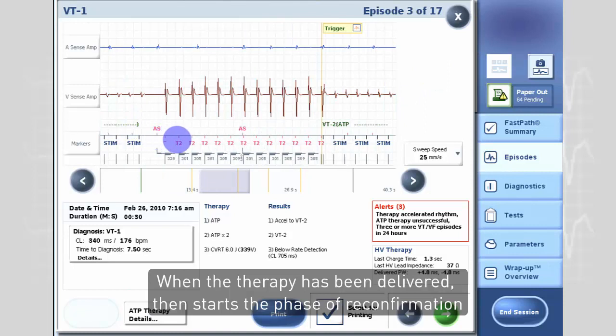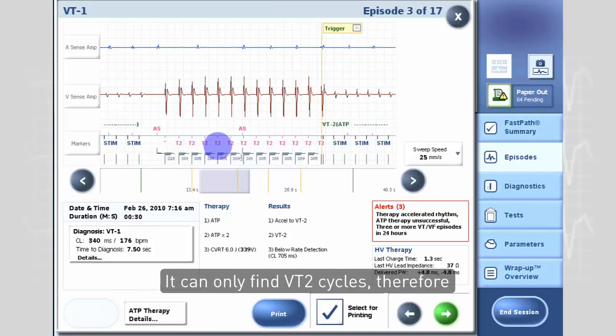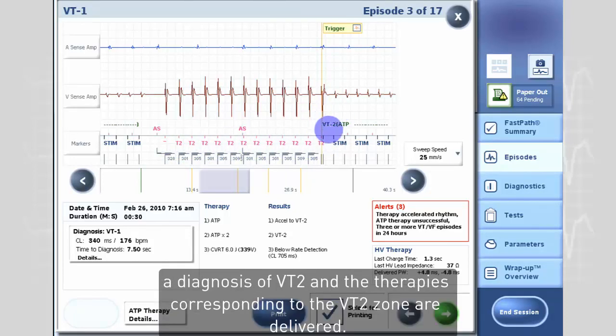When the therapy has been delivered, then starts the phase of reconfirmation. You can see here that once more there is a competition between the VT1 and the VT2 counter. It can only find VT2 cycles, therefore a diagnosis of VT2 and the therapy corresponding to the VT2 zone are delivered.